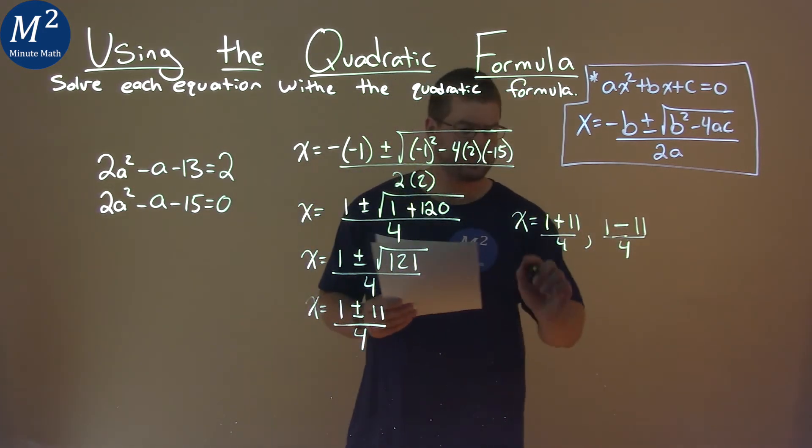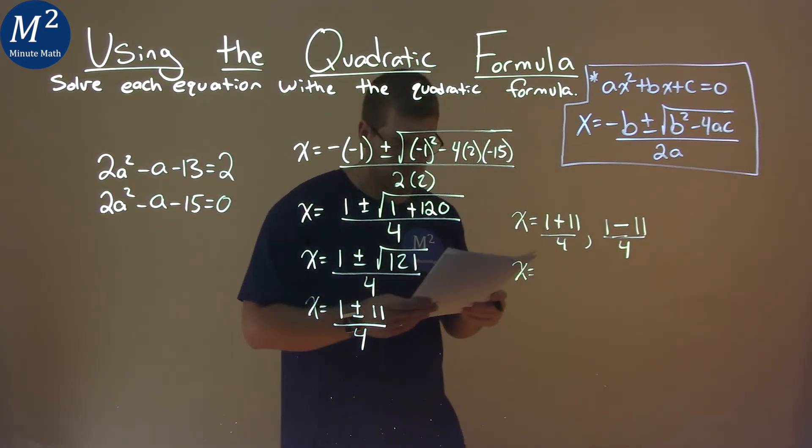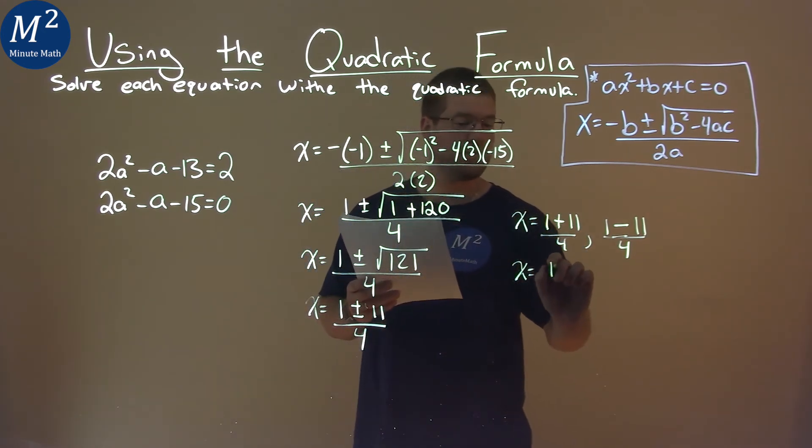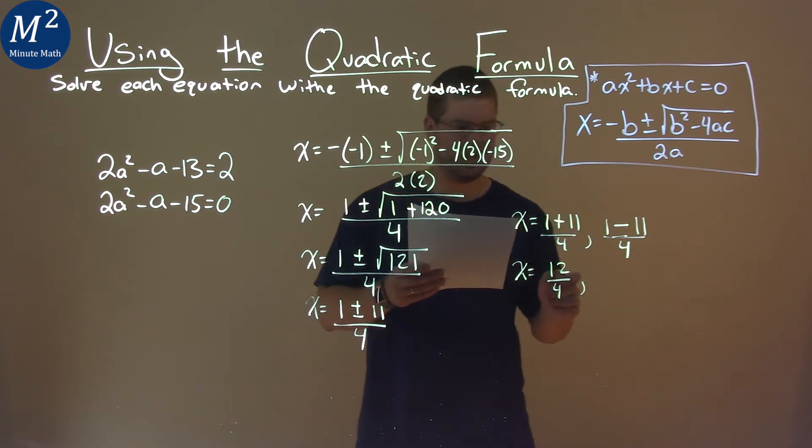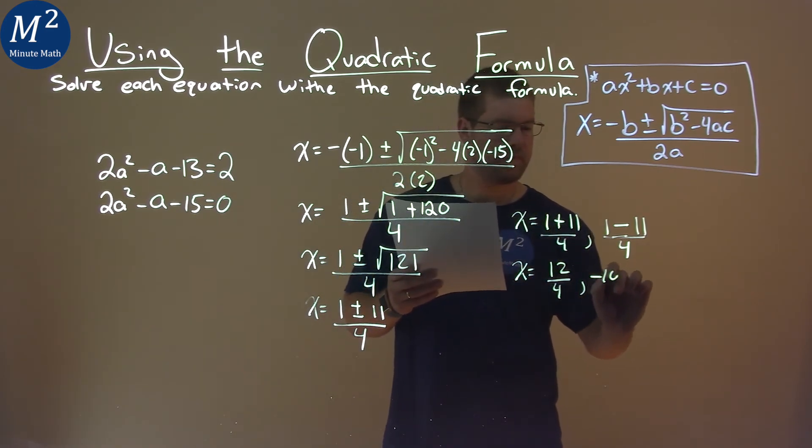Now let's solve. x equals 1 plus 11, which is 12 over 4, and 1 minus 11 is negative 10 over 4.